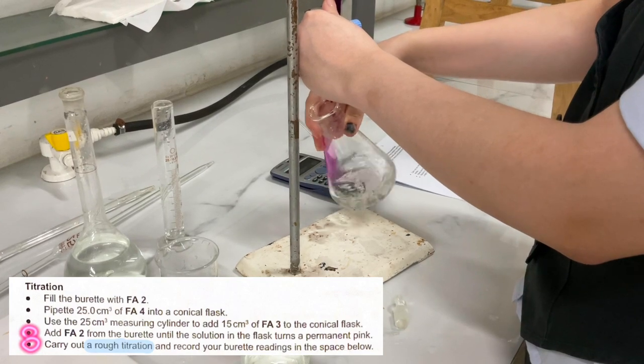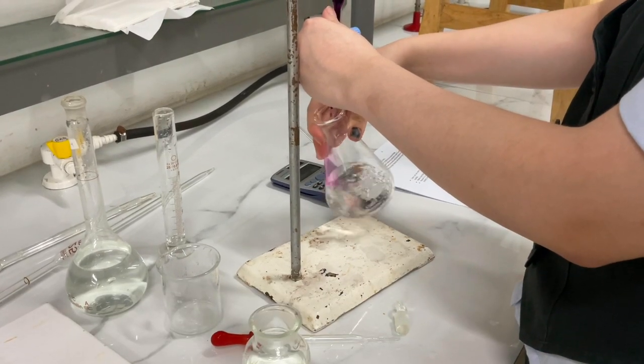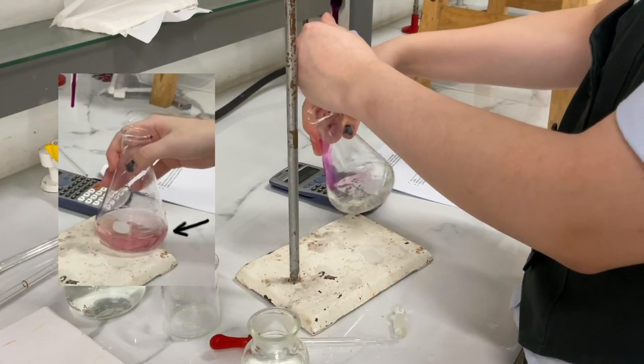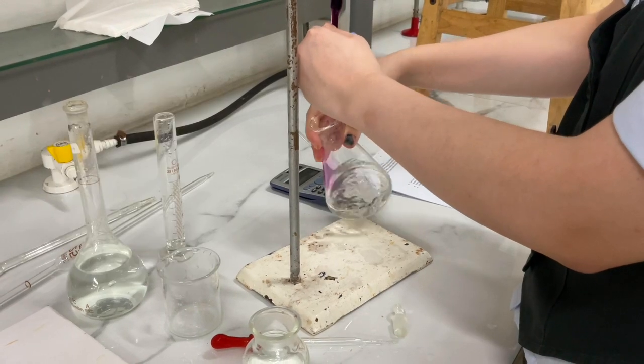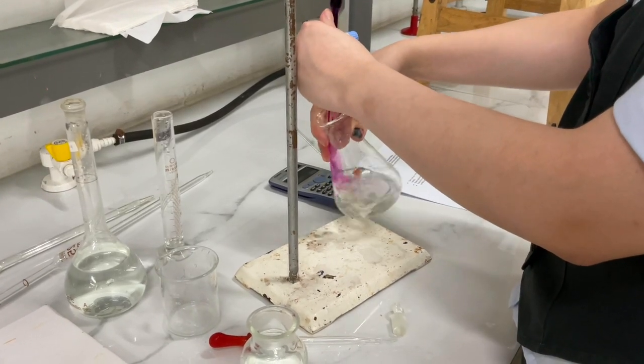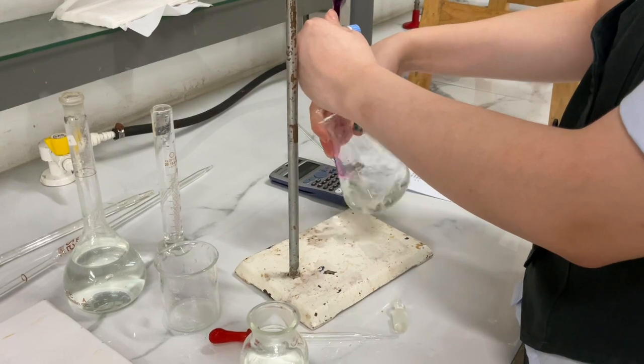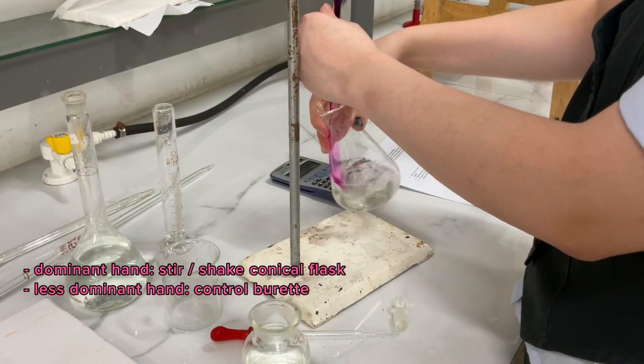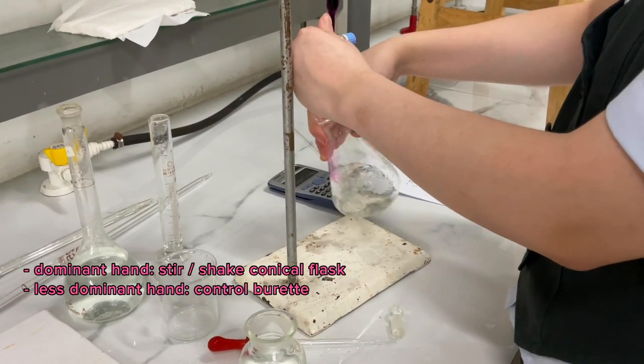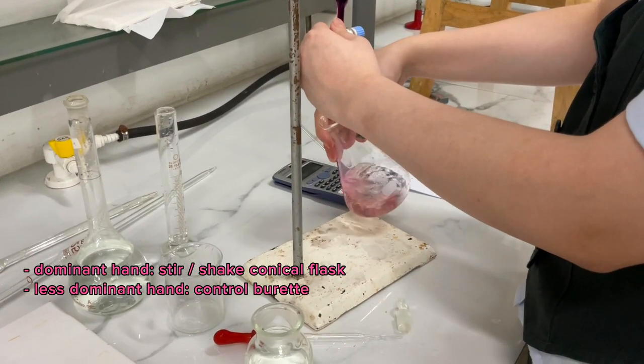Now, for the rough titer, add FA2 from the burette until the solution in the flask turns into a permanent pink. Do not do this drop by drop. Instead, let FA2 flow until color change is seen. This can be done with your dominant hand used to stir or shake the conical flask and your less dominant hand for controlling the burette.